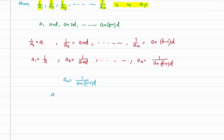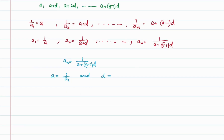Now, a is equal to 1/a1 and the common difference d is equal to the difference between the reciprocals, that is 1/a2 − 1/a1, which will also equal 1/a3 − 1/a2, and so on. We can use this formula to find the nth term of a harmonic progression if we know the first term along with any one other term in the sequence.